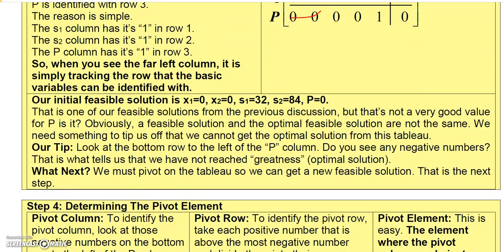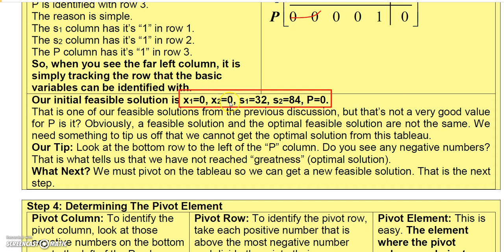Even though that gives us a basic feasible solution, it doesn't give us the optimal solution. That would be our initial feasible solution, but it's not optimal. Because if that were optimal, it wouldn't make much sense — we would just manufacture zero of this and zero of this, giving a profit of zero.